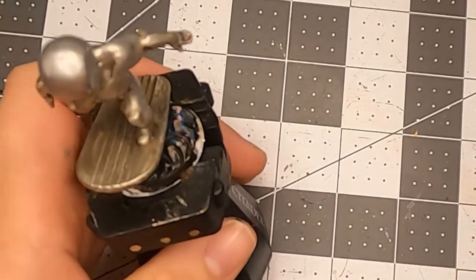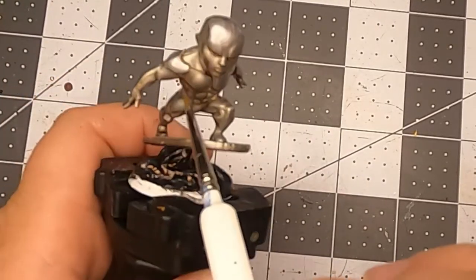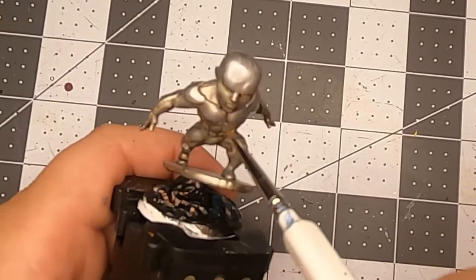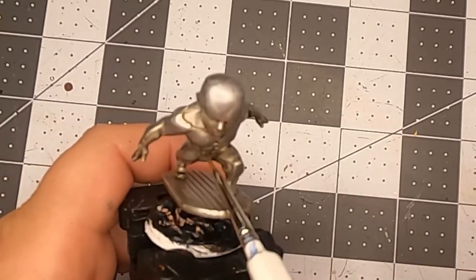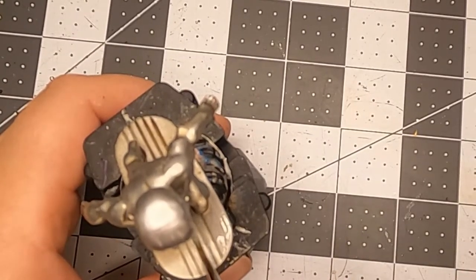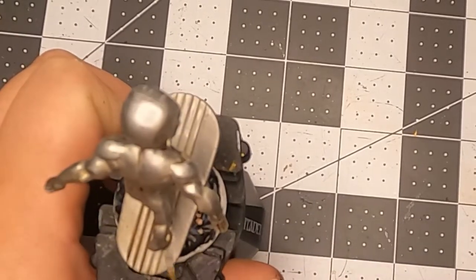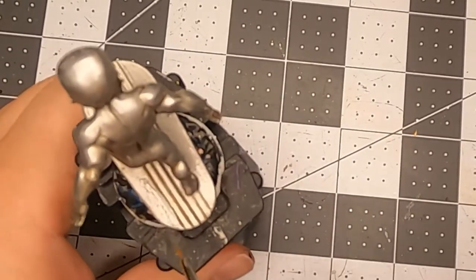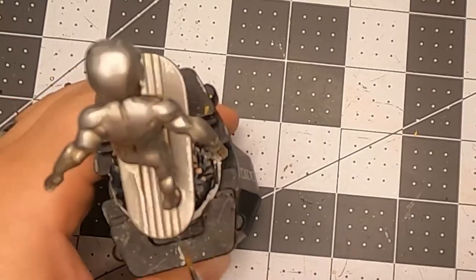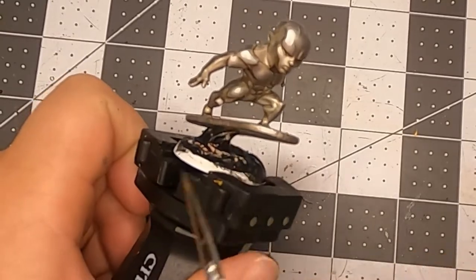And literally went over the whole entire thing in the silver, getting anything that's raised, like his muscles and his knee and anything like that, that's gonna get the silver. So right underneath, you'll still see that tone a little bit better. Then I went over to surfboard with all the silver again to make sure I got everywhere.